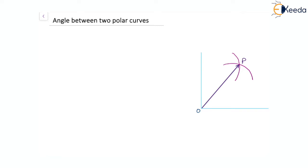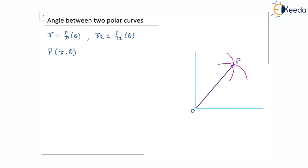Let's say the first polar curve is R equal to F1(theta). The second one is R2 equal to F2(theta). P, the point of intersection for the polar curve, let this be (R, theta). That means the angle of OP with the initial side should be theta.